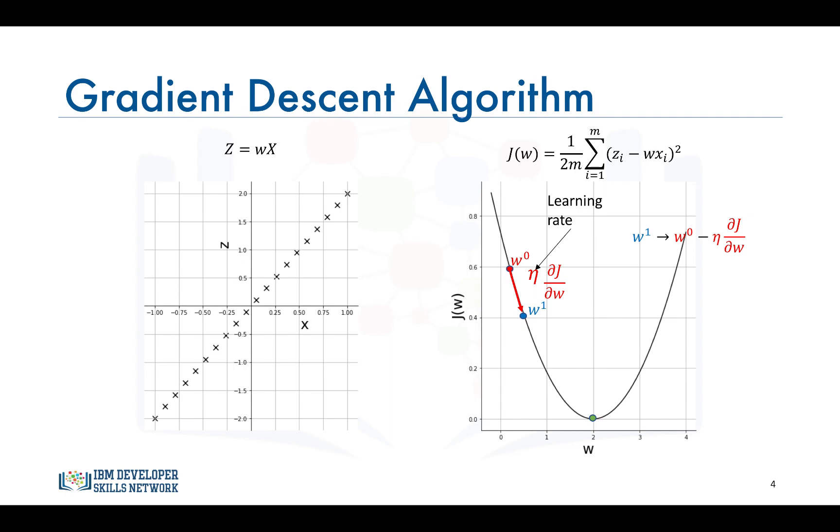At w1 we repeat the same process of computing the gradient at w1 and using the same learning rate to control the magnitude of the step towards the minimum. We keep repeating this step again and again until we hit the minimum or a value of the cost function that's very close to the minimum within a very small predefined threshold.